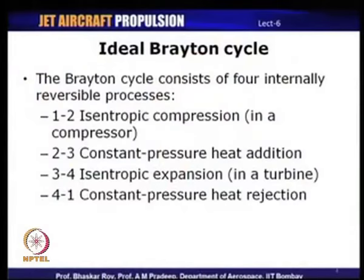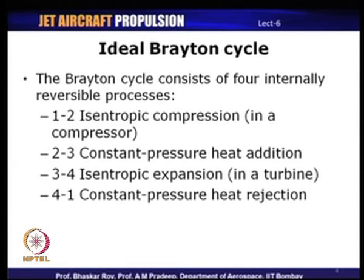The ideal Brayton cycle consists of four internally reversible processes: two isentropic processes and two constant pressure processes. The first process, from state 1 to state 2, is isentropic compression in a compressor. The second process is constant pressure heat addition, taking the working fluid from state 2 to state 3.